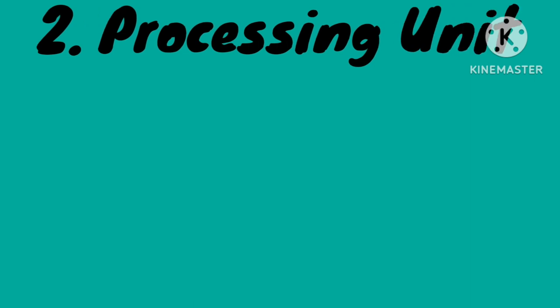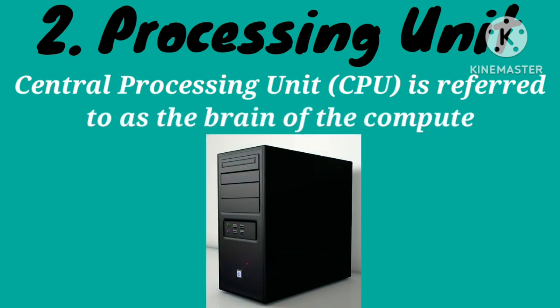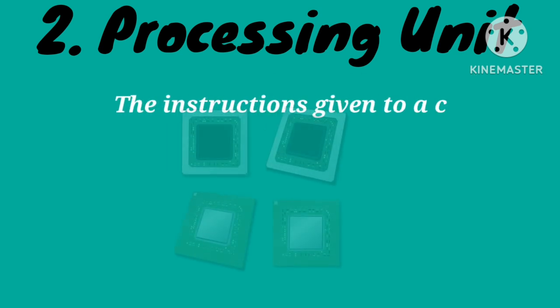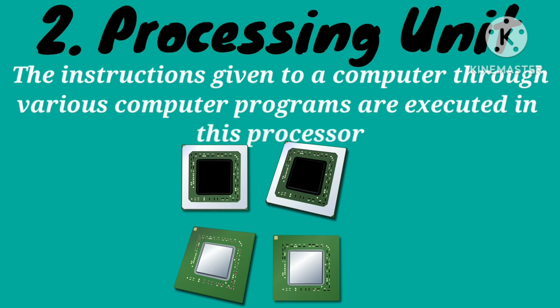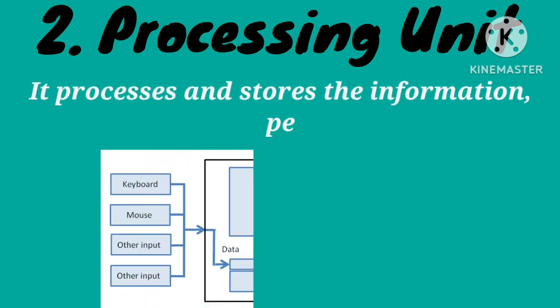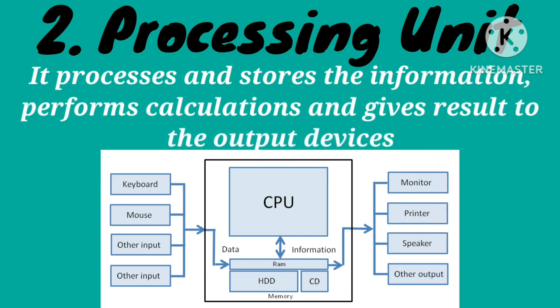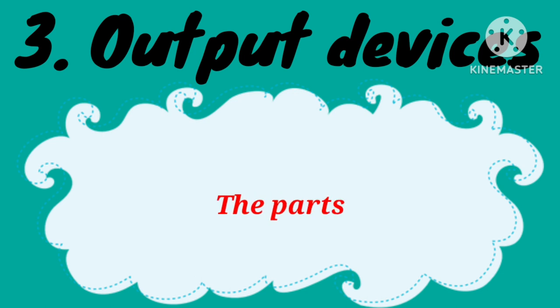Number two, processing unit, also known as central processing unit or CPU. It is referred to as the brain of the computer. The instructions given to a computer through various computer programs are executed in this processor. It processes and stores information, performs calculations, and gives results to the output devices.